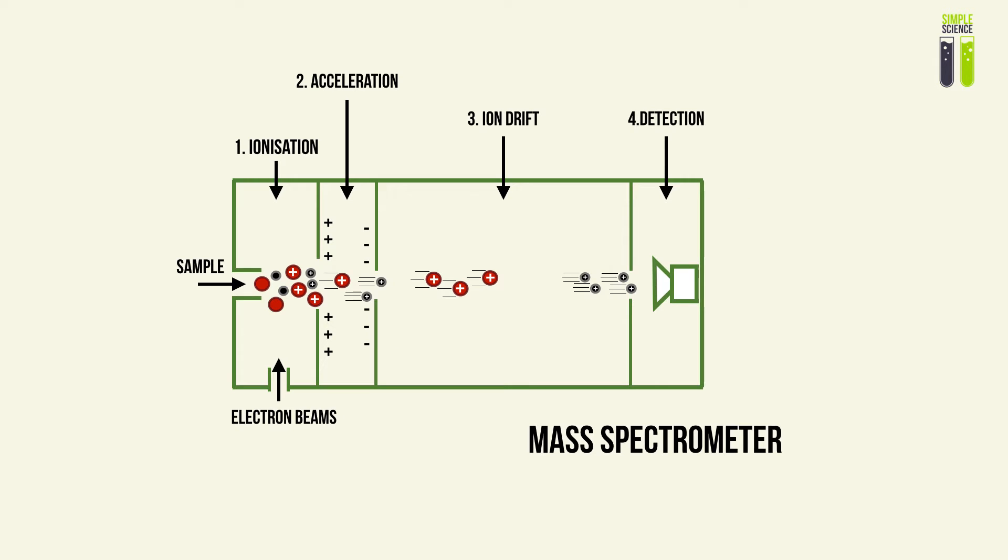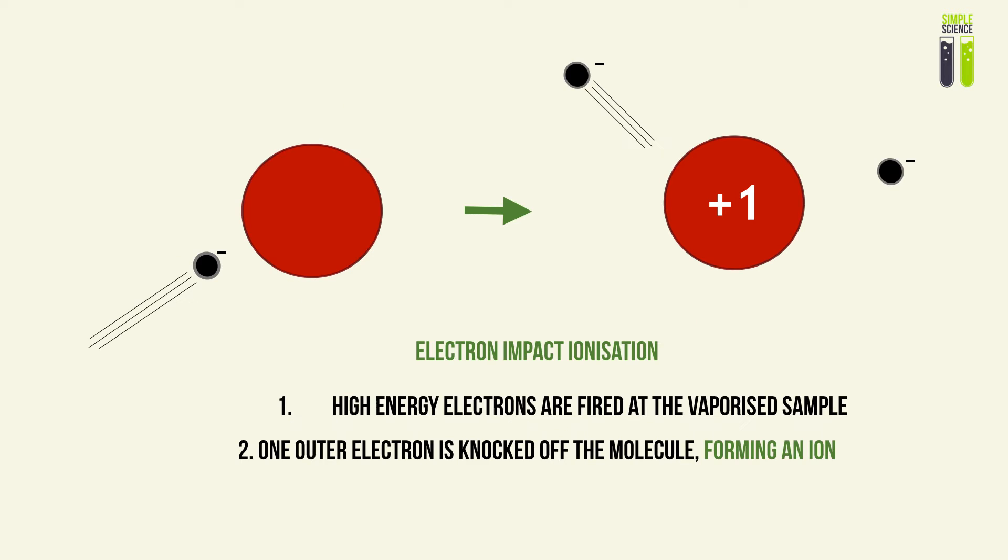This is a very important concept that we did talk very briefly about in our mass spectrometry video. Ionization takes place at the first step in mass spectrometry, and it is due to electron impact ionization — high-energy electrons being fired at a gaseous sample, which causes one electron to be knocked off the molecule or ion.